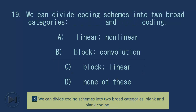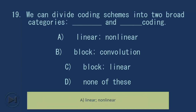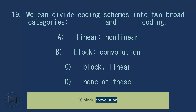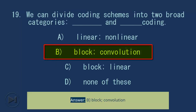Question 19: We can divide coding schemes into two broad categories: blank and blank coding. A) linear, nonlinear; B) block, convolution; C) block, linear; D) none of these. Answer: B, block, convolution.